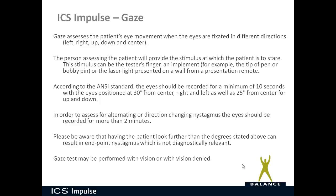In order to assess for alternating or direction-changing nystagmus, the eyes should be recorded for more than 2 minutes. Please be aware that having the patient look further than 30 degrees for right and left, or 25 degrees for up and down, can result in endpoint nystagmus, which is not diagnostically relevant.